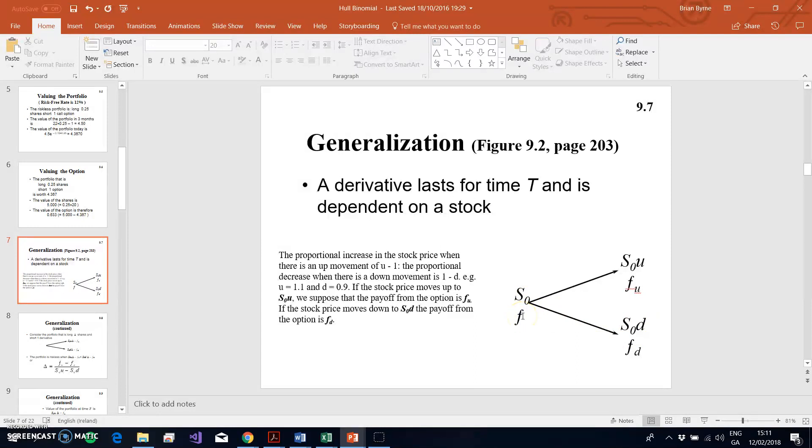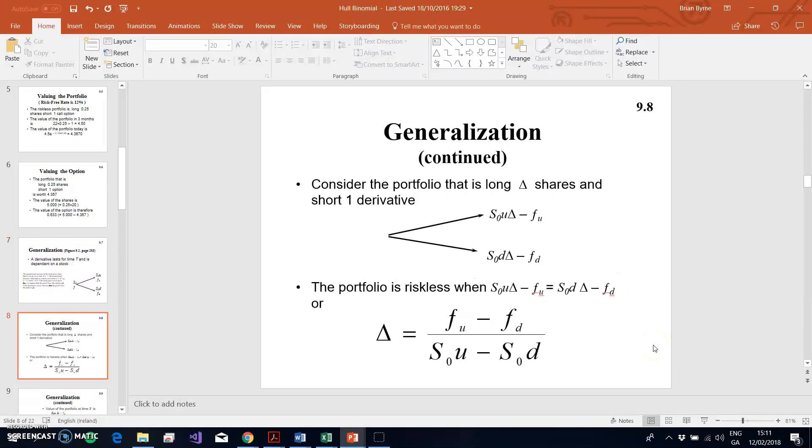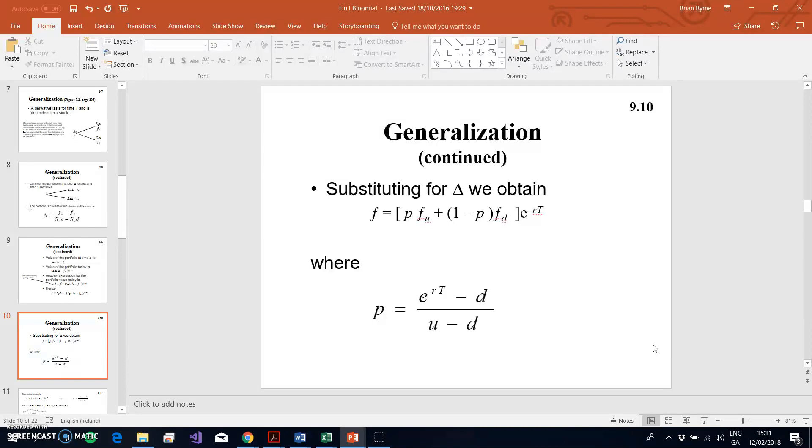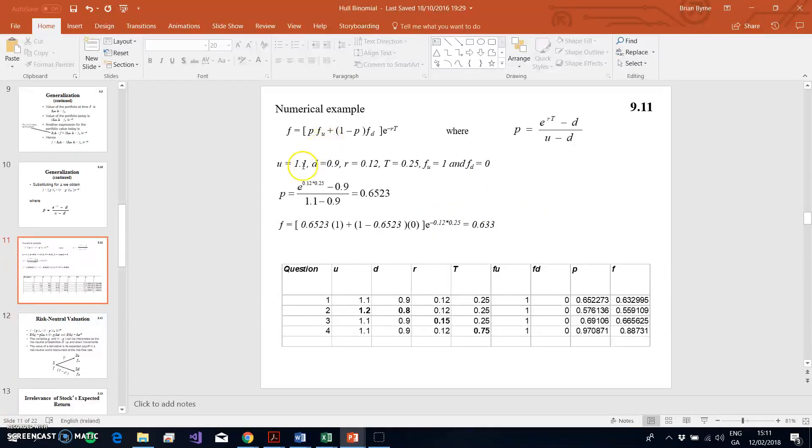f here denotes the value of the option, whether it's a call or a put. In this instance we're just going to go with a call. Then the value of the option if the stock price goes up and the value of the option if the stock price goes down. We can do a little bit of algebraic manipulation. If we fully go through that, implement generalization, we can deduce a risk-neutral probability, which we'll see in a moment is important for some coding and also for backward induction.